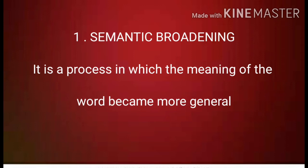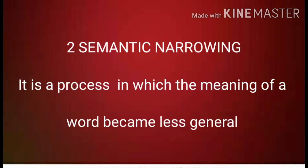The next process is semantic narrowing and specialization. This is a process in which the word became less general or less inclusive than its historically earlier meaning. For example, meat earlier means any type of food, and the meaning now is changed to the flesh of an animal. Here the meaning of the word became less general.